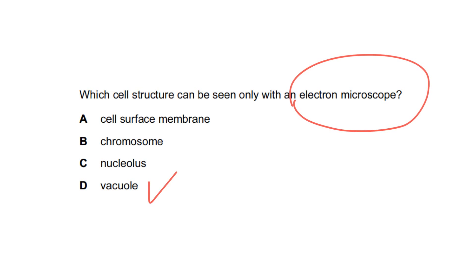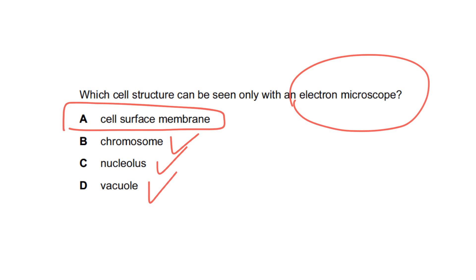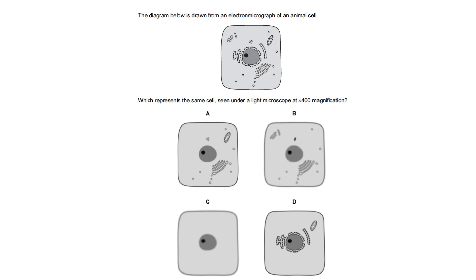Another question: which cell structure can be seen only with an electron microscope? The nucleus and nucleolus can be seen with the light microscope. Chromosomes during cell division can also be seen with the light microscope. The cell surface membrane is about 7 nanometers in size, so even though we might perceive a line, we cannot actually see the cell surface membrane with a light microscope — only an electron microscope makes it possible.